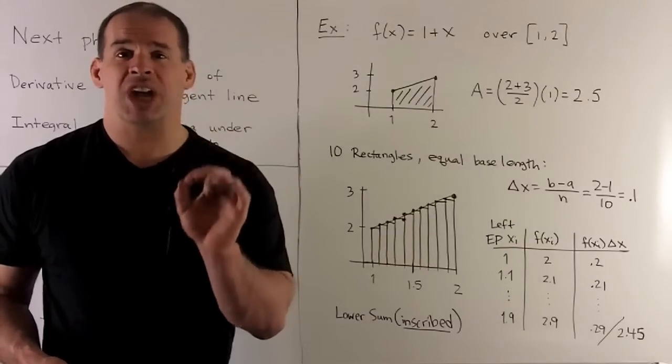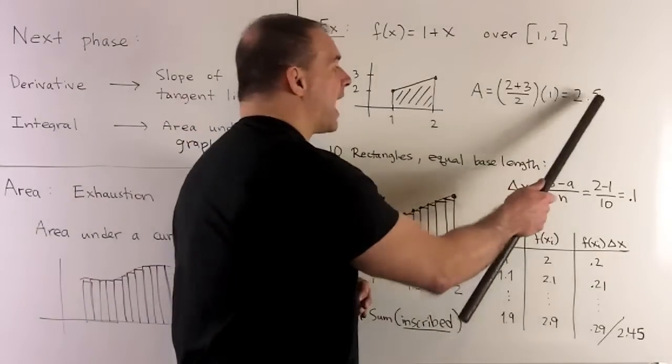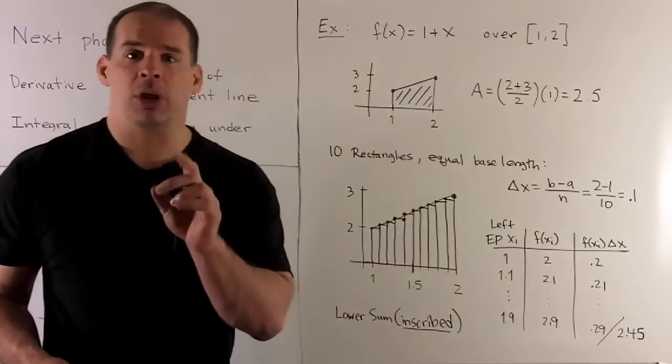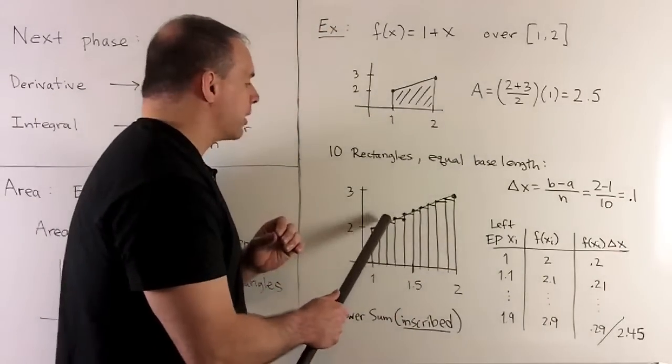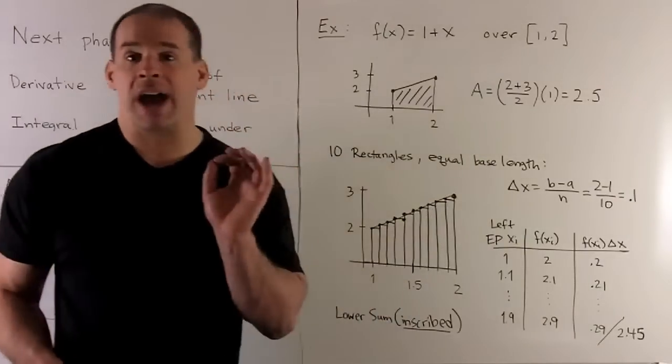And then, when we sum the areas, we're going to get 2.45. So, that's just shy of the actual area, which is 2.5. And that's believable because you'll note we have little gaps above each rectangle. So, we have an underestimate.